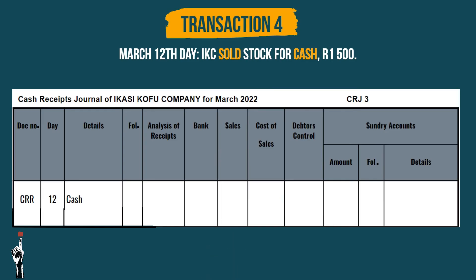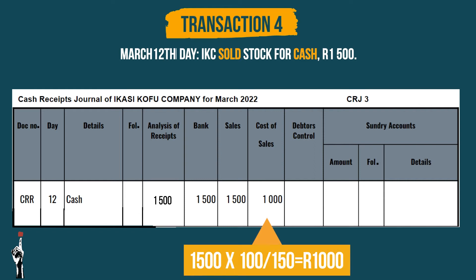CRR will be the document number. The day is the 12th. We must remember to record in the analysis of receipts and bank column. The sales column will be 1,500 Rand. We should then calculate the cost of sales as they didn't give it to us. That is 1,500 Rand times 100 divided by 150, which equals 1,000 Rand.